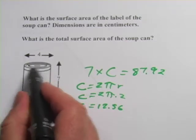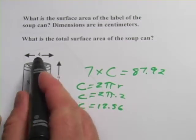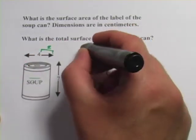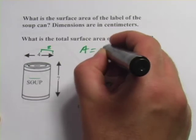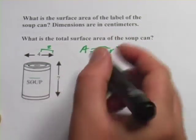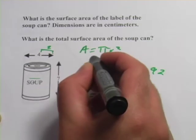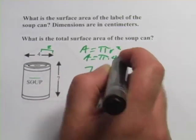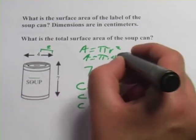And to figure out the area of the top and the bottom, we just have to know the formula for the area of a circle. We know the radius is 2. I figured that out last time. And the formula for the area of a circle is pi r squared. So let's figure out the area of the top first here. So 2 squared is 4, so that's area equals pi times 4. And that would be 12.56.